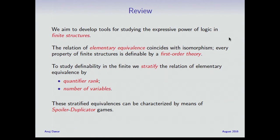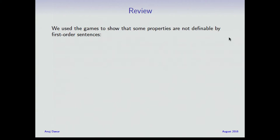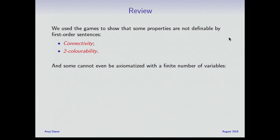Each of these has a nice characterization in terms of spoiler-duplicator games. It's in some ways a reformulation of the equivalence, but it gives us a perspicuous way of describing and using these equivalences. We use these games to show that some properties are not definable by first-order sentences — connectivity, colorability — and some are not even axiomatizable by a finite number of variables, such as evenness, the existence of a perfect matching in a graph, and Hamiltonicity.